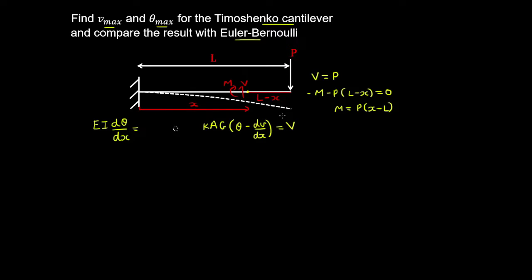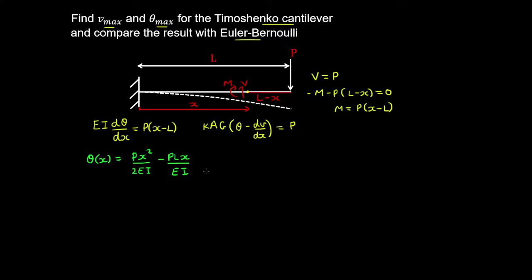We now substitute the bending moment and shear force into the governing equations. Integrating the bending equation gives an expression for the bending rotation: px² / 2EI minus PLx / EI plus a constant of integration. Applying the boundary condition that the bending rotation at x equals 0 is zero, we find that c₁ equals zero.